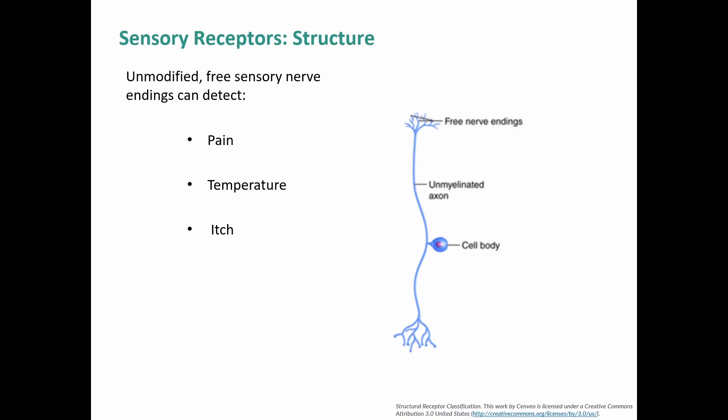Some free nerve endings detect colder temperatures compared to the body, and as temperature gets colder by comparison, they fire off more action potentials. They don't necessarily detect both — some will go for warm, some for cold, as well as things like itch and touch. These are simply open, unmodified free nerve endings with nothing changed about them.